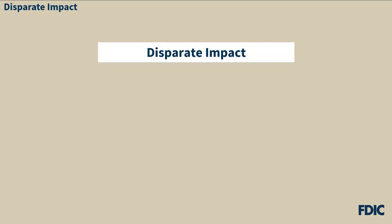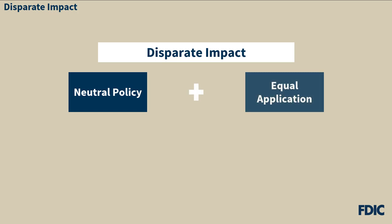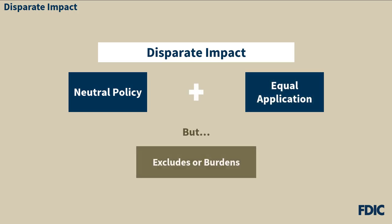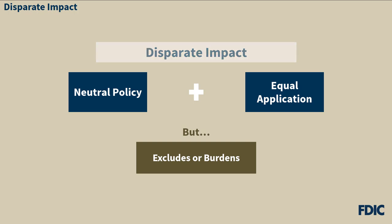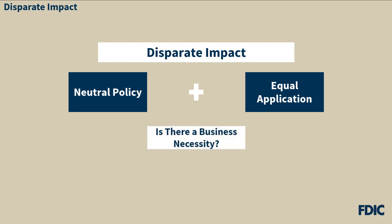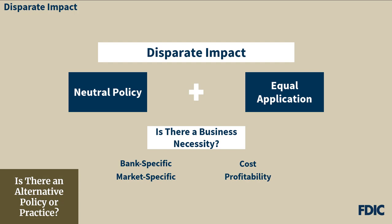Now that we've covered disparate treatment, let's talk about disparate impact. Disparate impact is when a lender applies a seemingly neutral policy or practice equally to all credit applicants, but the policy or practice disproportionately excludes or burdens certain groups of people on a prohibited basis. If the policy or practice has a disparate impact, the next step is to determine whether it is justified by a business necessity that was established before the policy was implemented. Factors that may be relevant include cost and profitability. However, even if a policy can be justified by a business necessity, it still may be discriminatory if an alternative policy could serve the same purpose with less discriminatory effect.